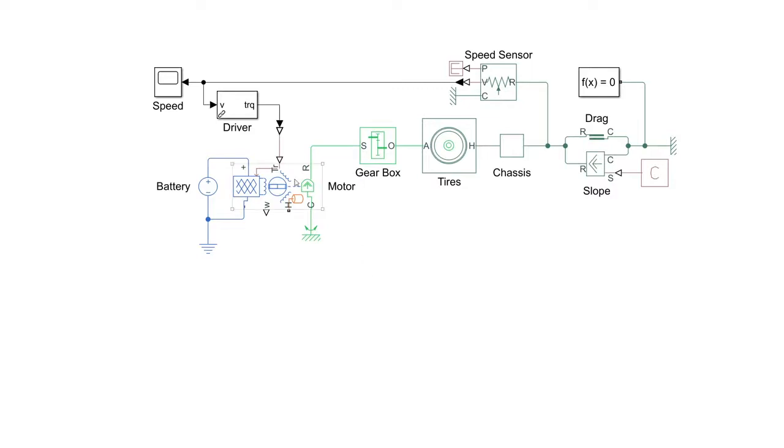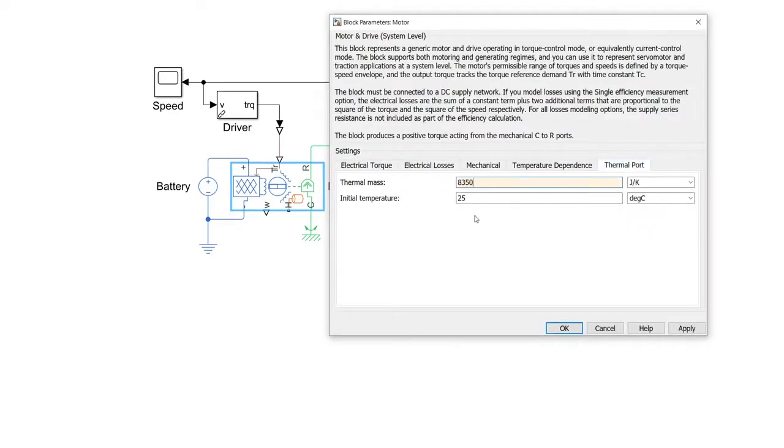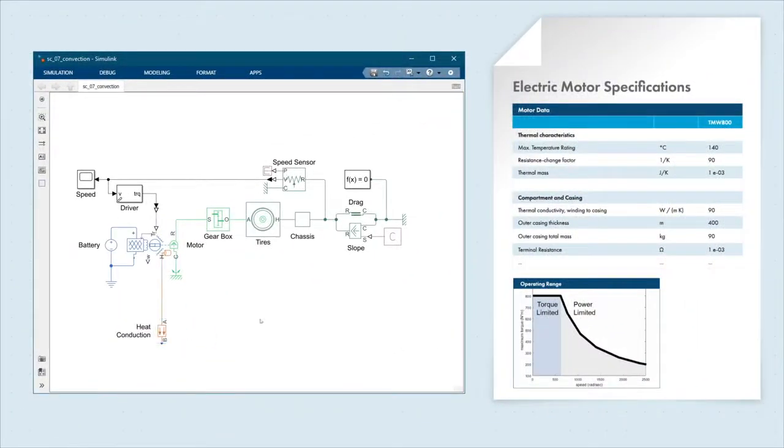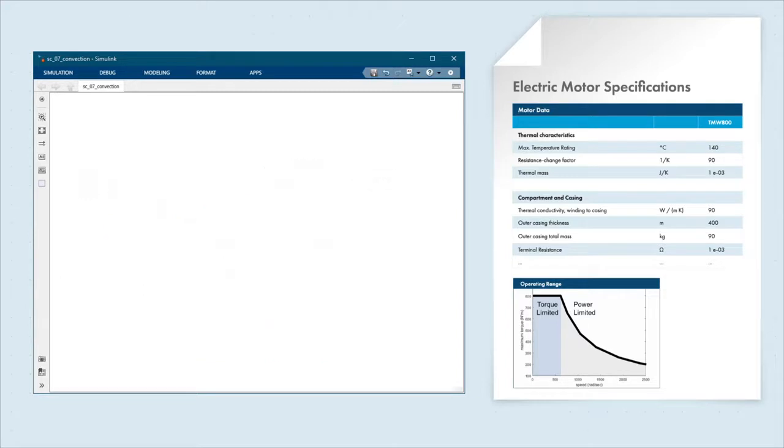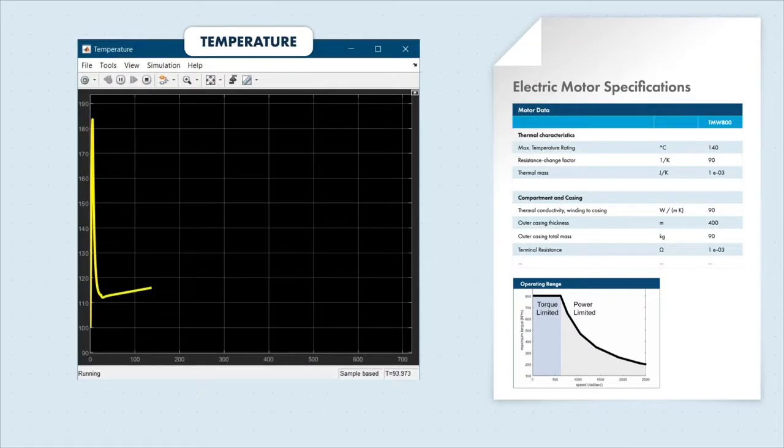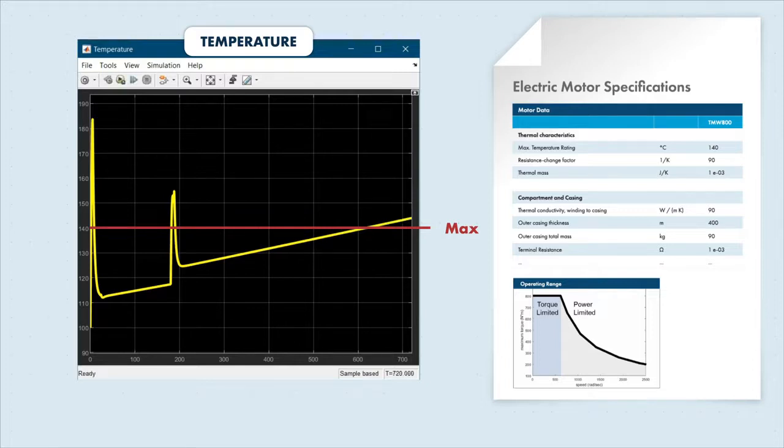We can add a thermal port to the motor, which lets us model heat transfer to the environment. Heat conducts to the motor casing and convects to the outside air. We need to monitor the motor temperature, so we add a temperature sensor. Now, we can just click the run button again and simulate the updated model and see how hot the motor gets. The motor temperature is over the design limit when the vehicle accelerates, and even just when cruising. That is not good. It's only rated to 140 degrees. Looks like we need to add a cooling system.